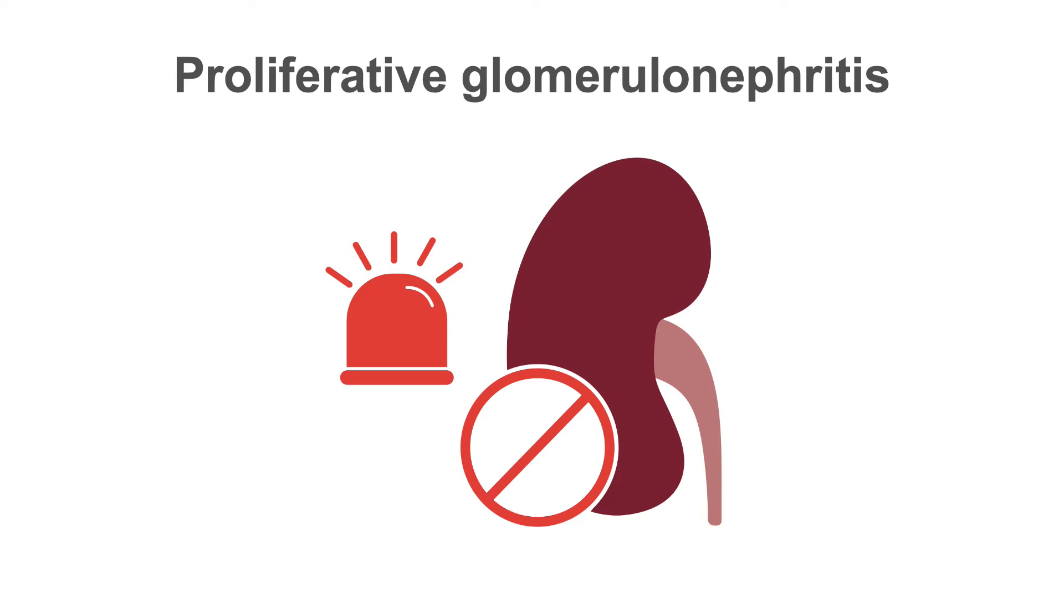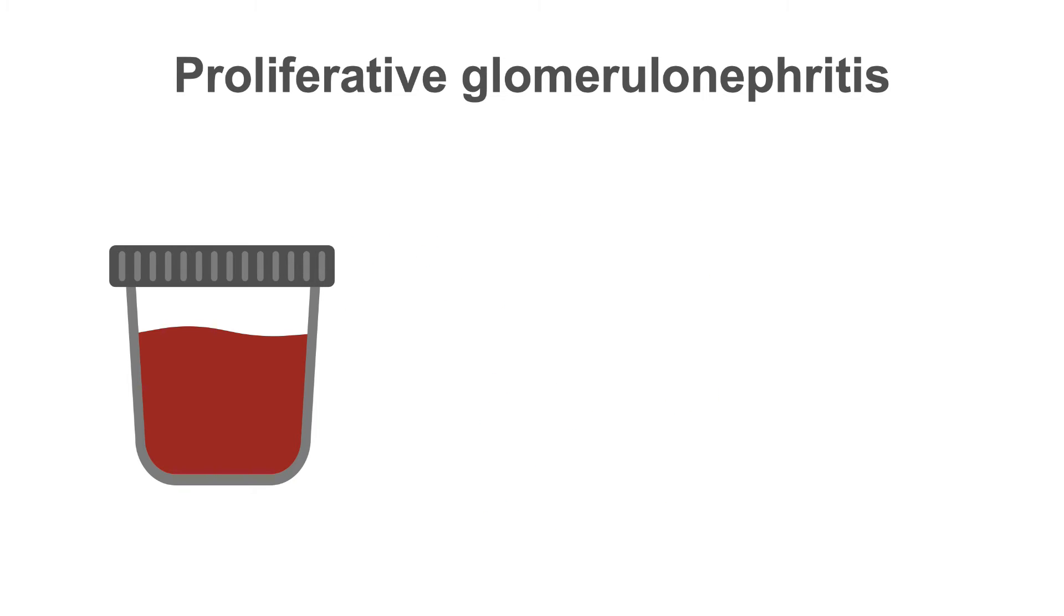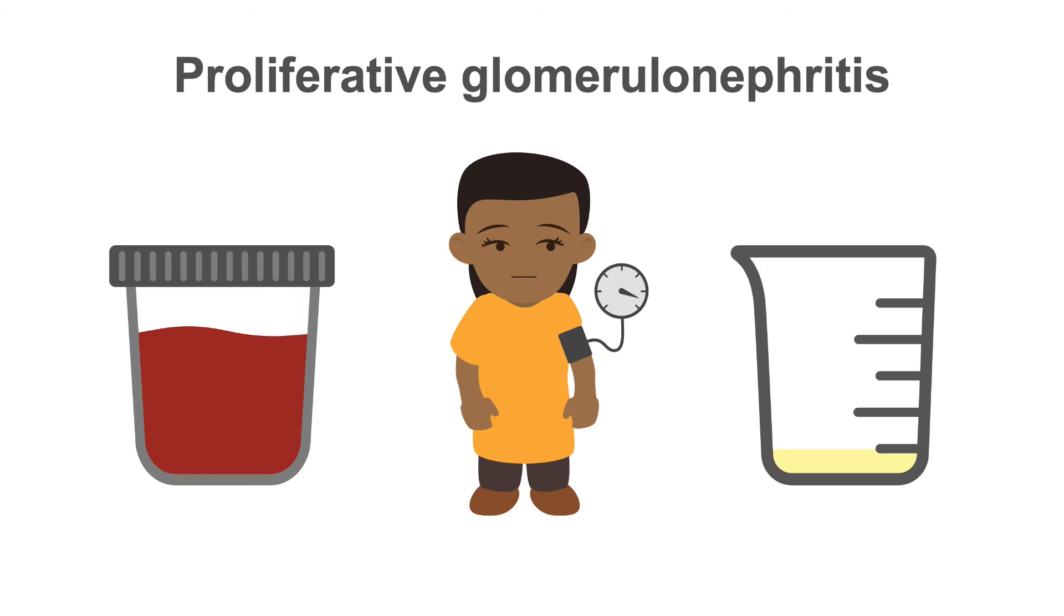Proliferative glomerulonephritis may present as acute renal failure or can present with nephritic syndrome which includes hematuria, hypertension, and oliguria.